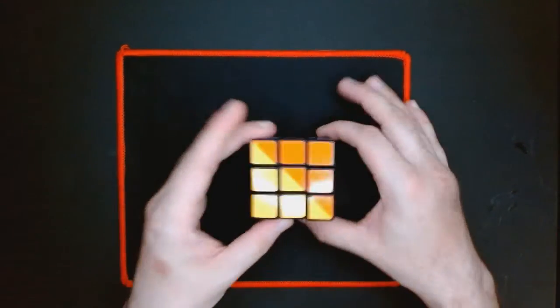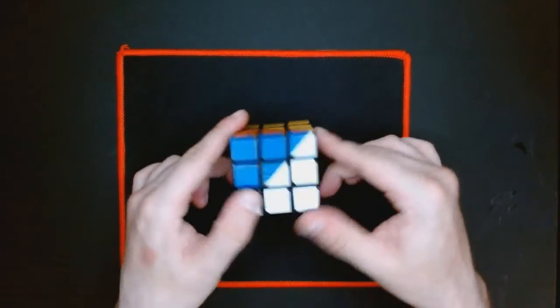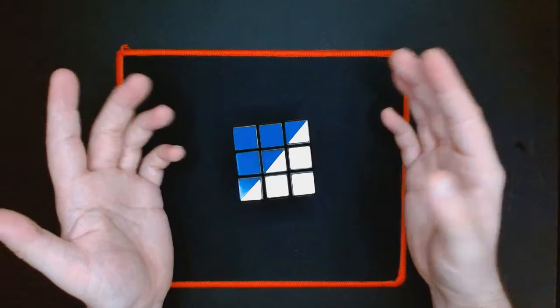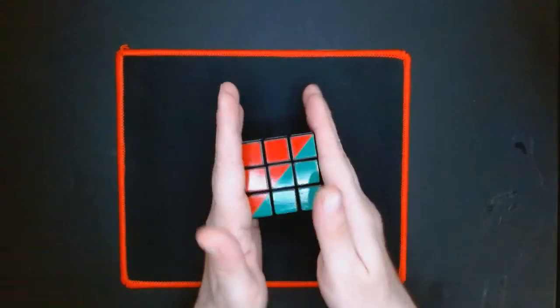There we go. As you can see, the Ruben King puzzle, the Ruben King cube is solved.